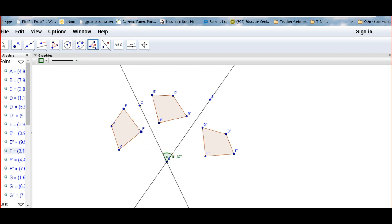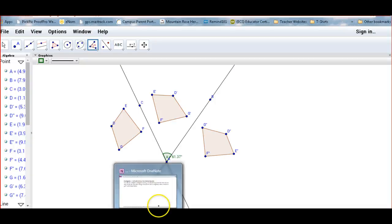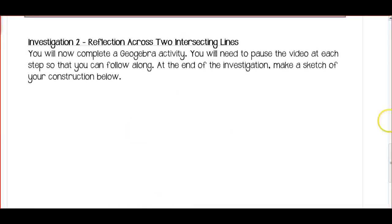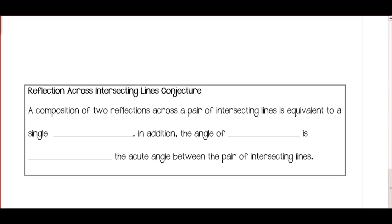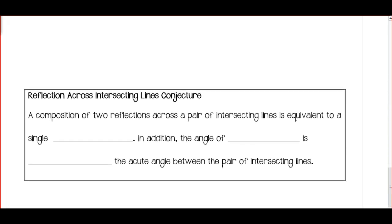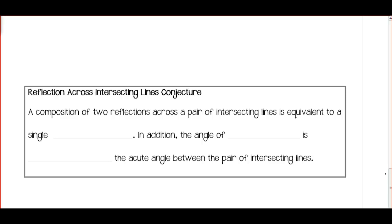Go ahead and play around with measuring those angles and see if you can figure out how to finish the conjecture back in the notes — Reflection Across Intersecting Lines Conjecture. There are some hints in the words that are already there, and we'll talk about that next time in class. Good luck with the investigation, and if you have any questions, write them down in the margins and ask me when you see me in class.